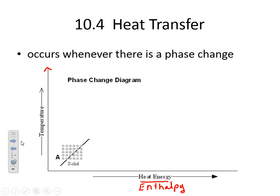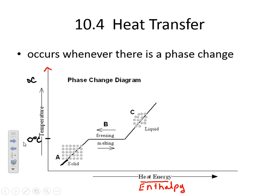Let's suppose this solid is ice — water ice. What temperature does water freeze at in degrees Celsius? You probably said zero degrees. So I'm going to label this at the end of that line: zero degrees Celsius. When ice melts — so we're going to the right on this diagram — notice that the temperature is staying constant, but the enthalpy is increasing.